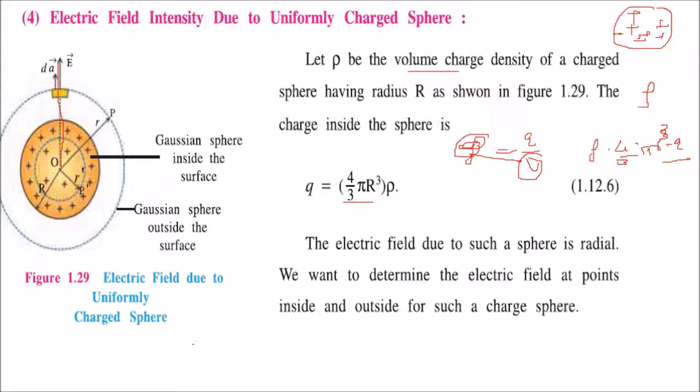What we will do is take a Gaussian surface inside at radius r' (r dash), where the actual sphere has radius R. For outside, we take a Gaussian surface at distance r. So inside will be r', outside will be r, and the actual radius of the uniformly charged sphere is R.